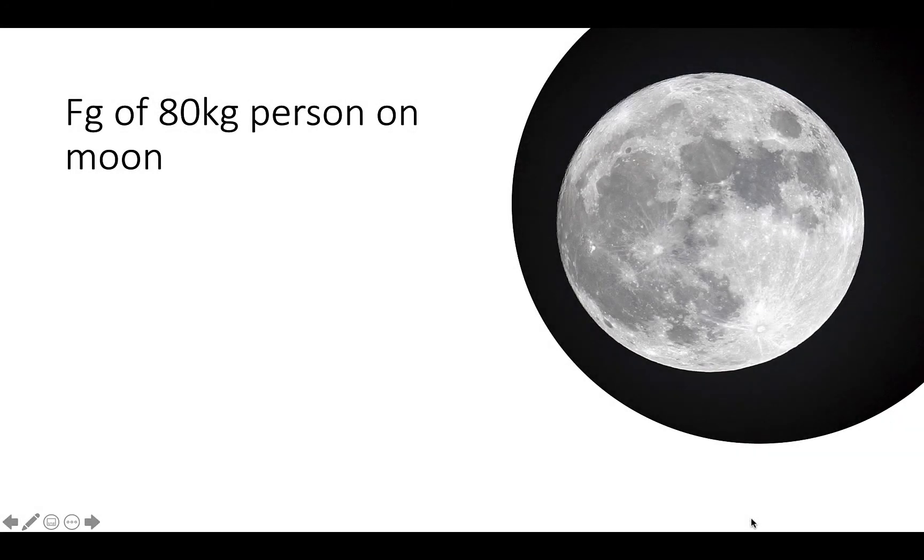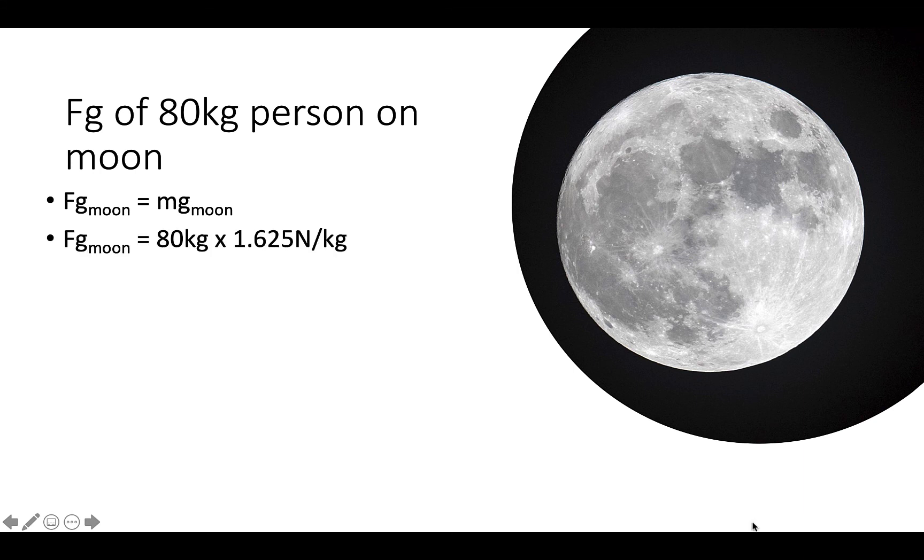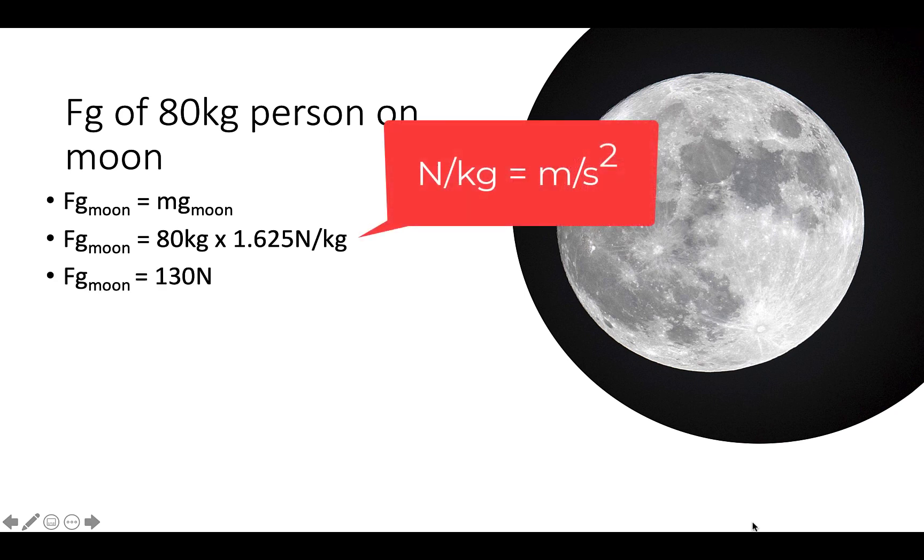Let's compare that with the force gravity of an 80 kilogram person on the moon. Fg moon equals mg moon. Fg moon equals 80 kilograms times 1.625 newtons per kg. An 80 kilogram person on the moon will weigh 130 newtons, roughly one-sixth that on Earth.